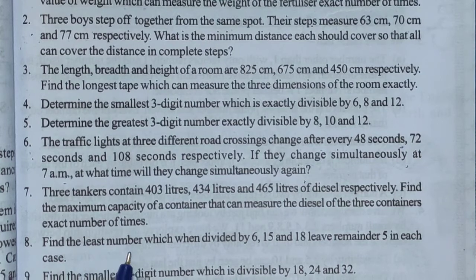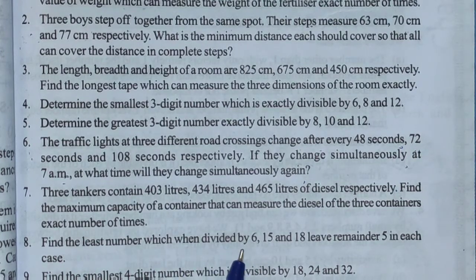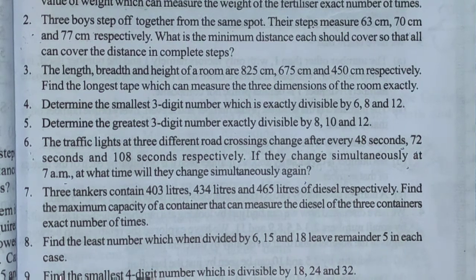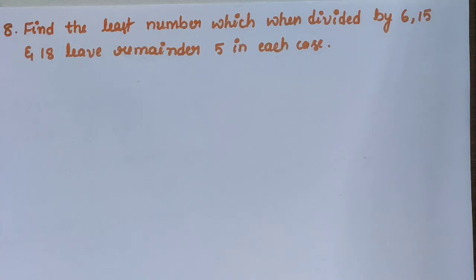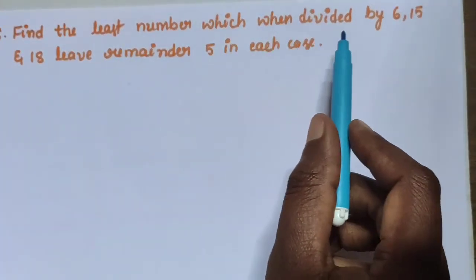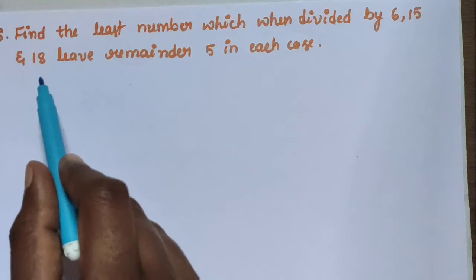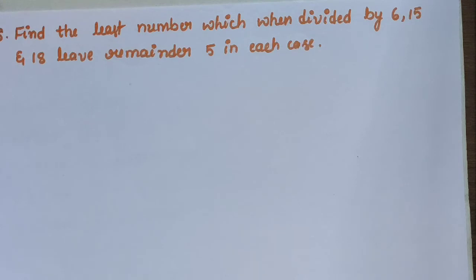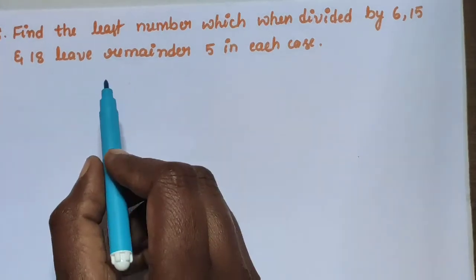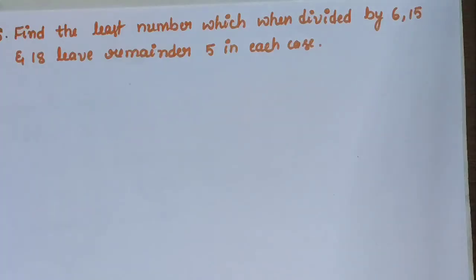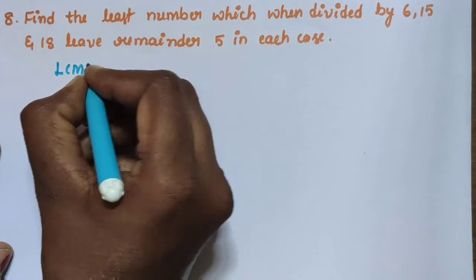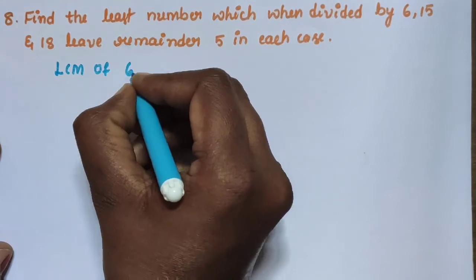Next question number 8. Find the least number which when divided by 6, 15 and 18 leaves a remainder of 5 in each case. First you find the LCM of 6, 15 and 18.